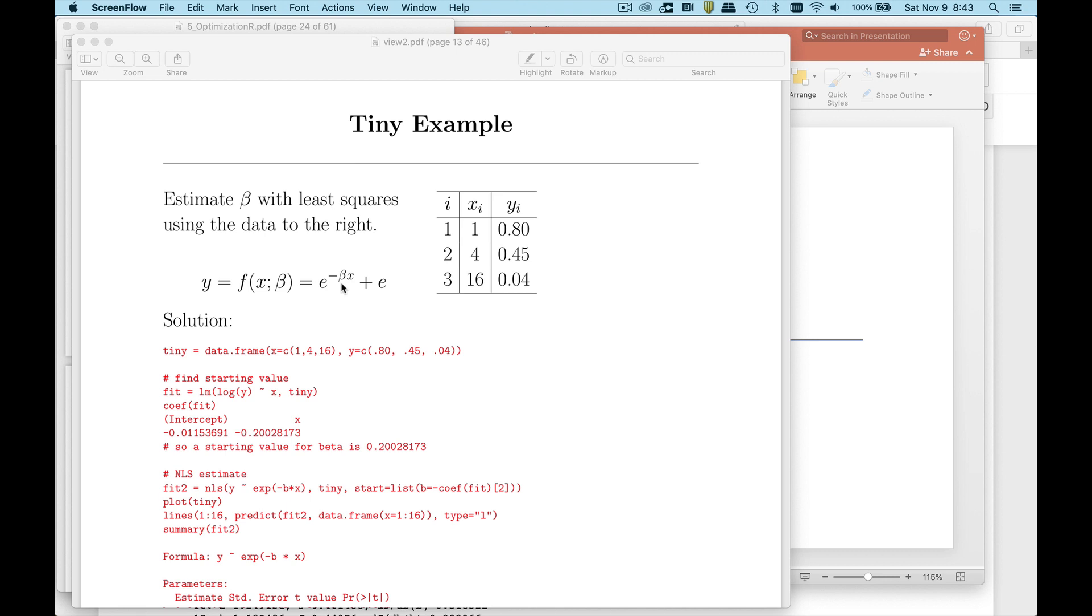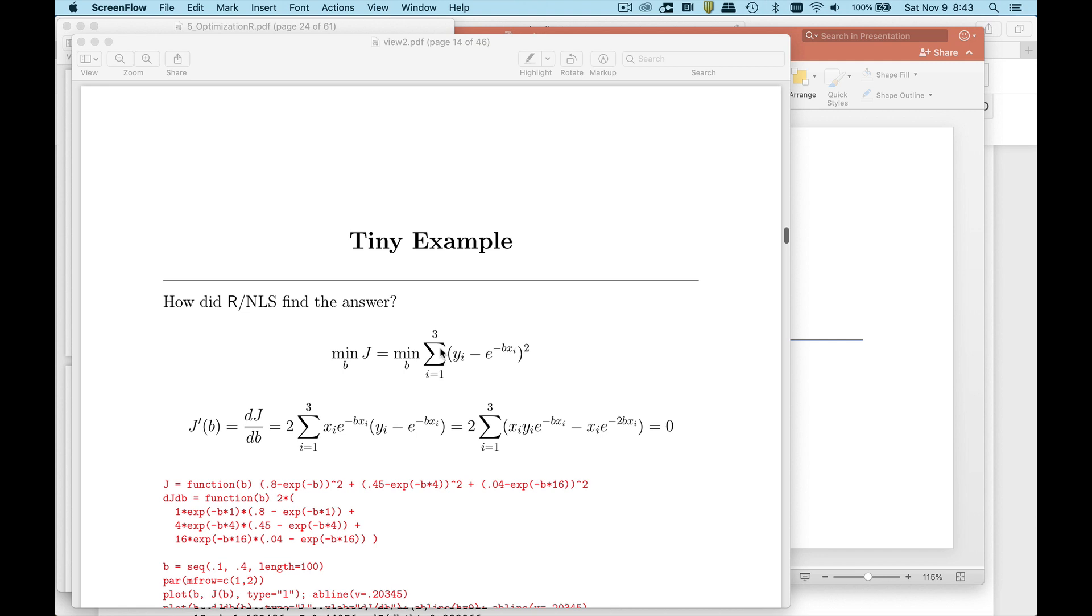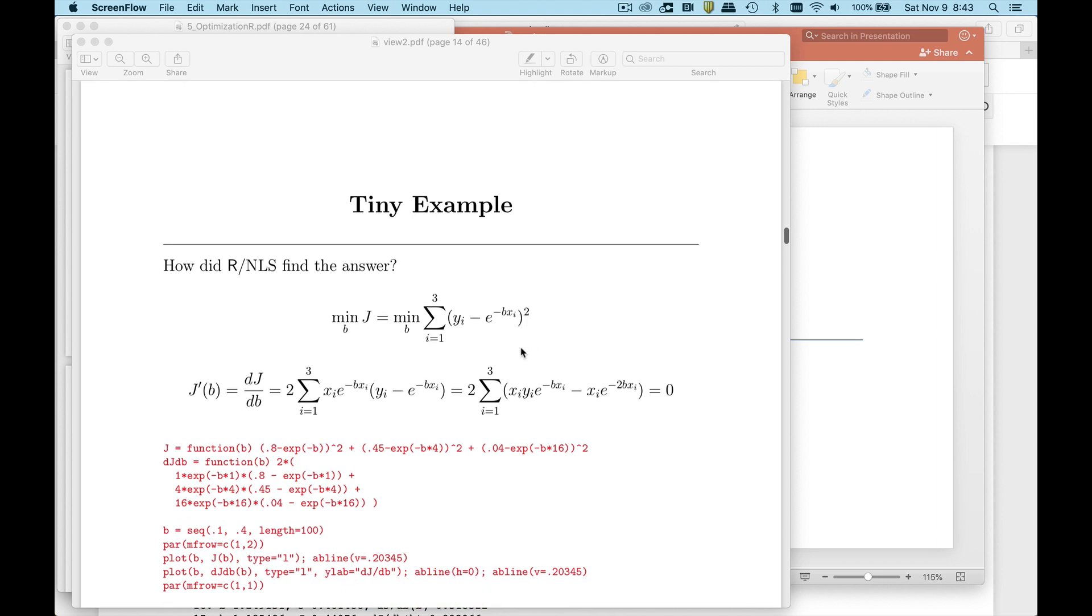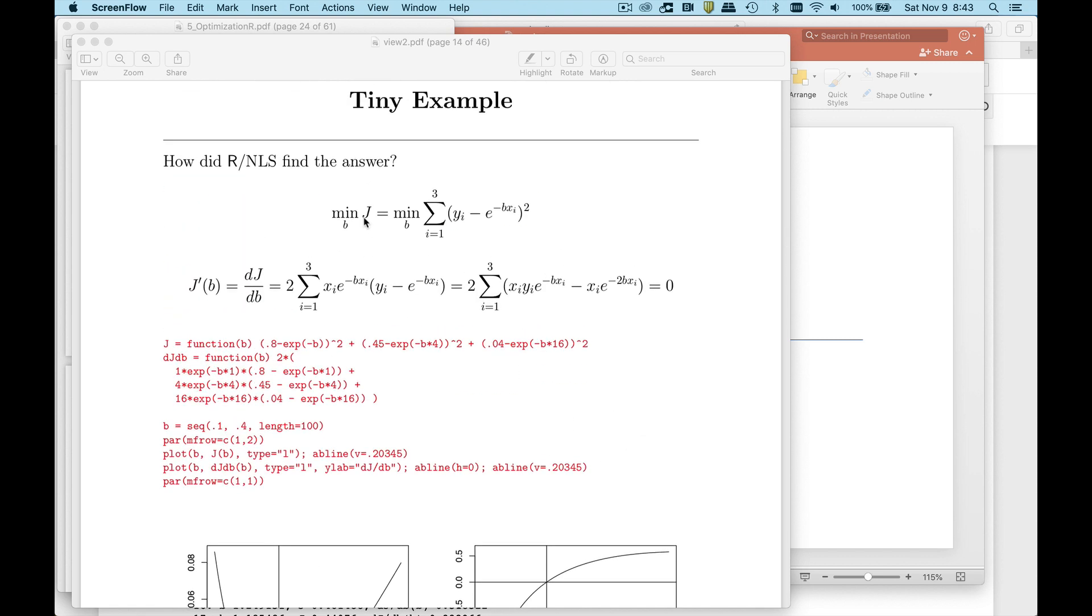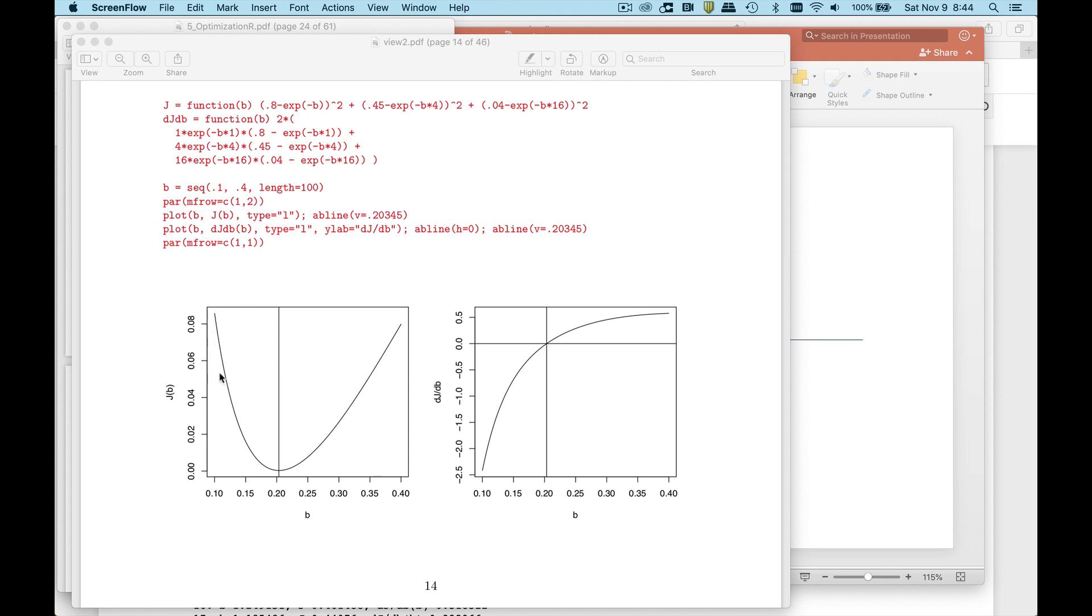Remember the least squares method is where you produce a predicted value y hat from this and you want to make that as close as possible to these y's in a squared sense. We had an objective function y minus e to the negative beta x squared and we want to make this as small as possible. We can plot this cost function that we were calling j and you'll see it has a nice bowl shape which is going to make life fairly easy for us.